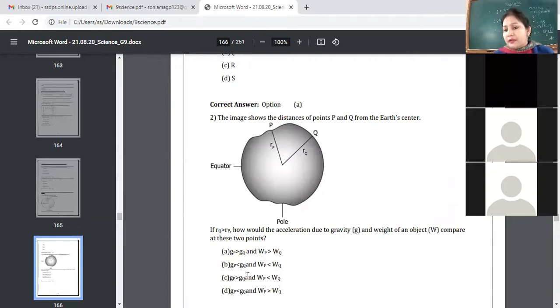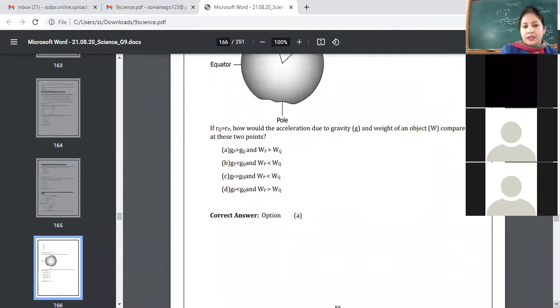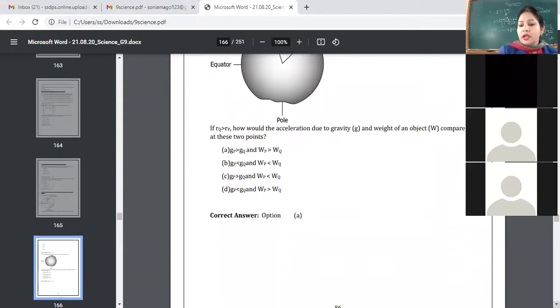That is given in two options. Now, how is weight related to G? So, so does weight, because W is equal to mg. If G is greater at a point, and weight will also be greater at that point. Weight will also be greater at that point. So A option would be correct, that GP is greater than GQ and WP is greater than WQ. Yes, option A is the answer.